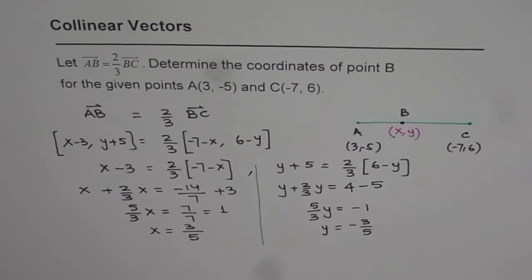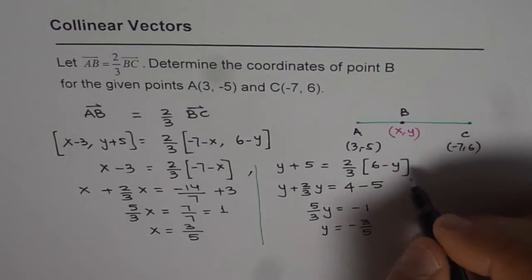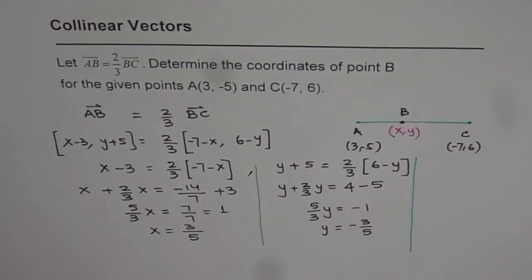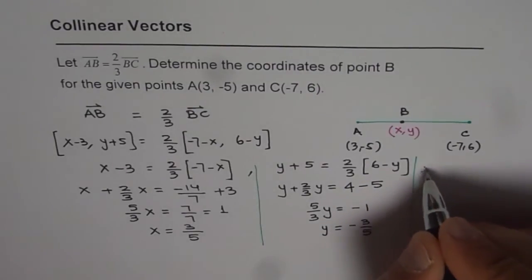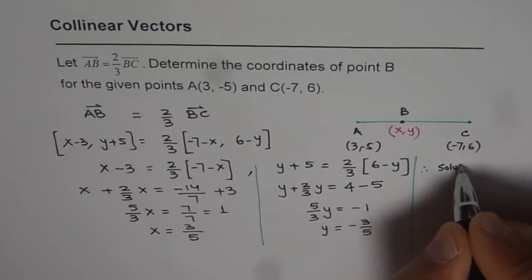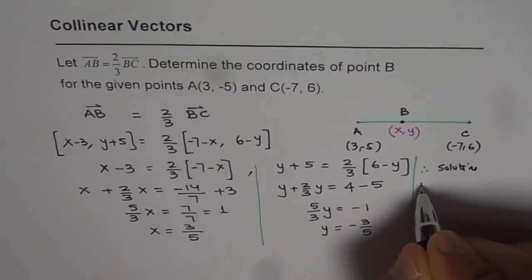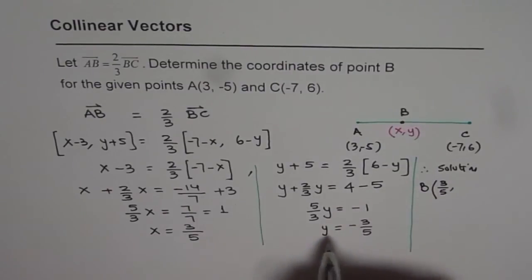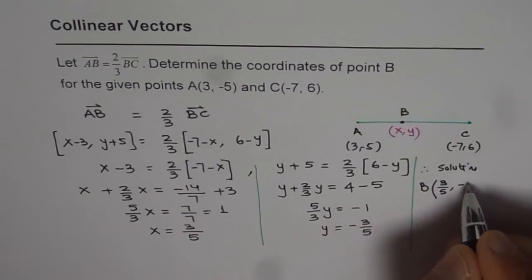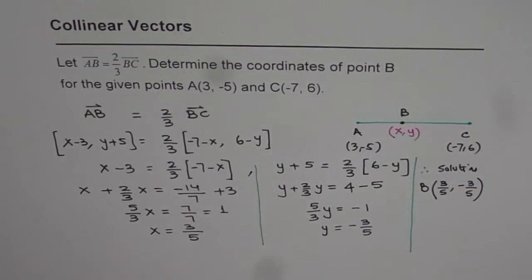So as you can see, the coordinates of X and Y are, so we get our answer which is point B. Therefore, the solution is B point is X coordinate 3 over 5 and Y coordinate is minus 3 over 5. So that is our answer. That is how we can solve these questions.